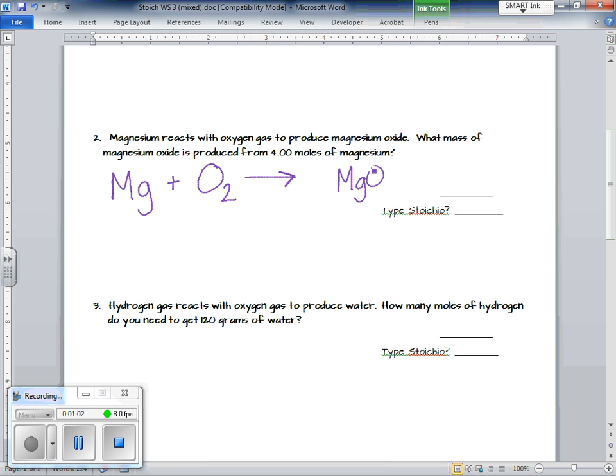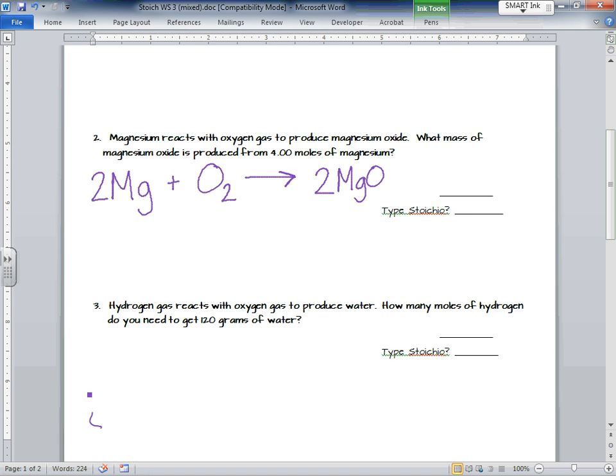Next, we need to balance this problem. Because I have two oxygen on the reactant side, I need to have two oxygen on the product side, and I also need to have two magnesium after I do that. So let's move on to the stoichiometry part of the problem now that I have my balanced equation.